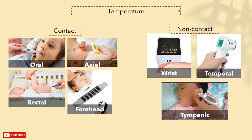Tympanic thermometers are placed inside the ear. They contain otoscope-like probes that are inserted into the external auditory canal and measure the thermal infrared energy emitted from the tympanic membrane. If there is any wax plug or if the external ear canal is curved and small, it might interfere with the accuracy of the measurement.